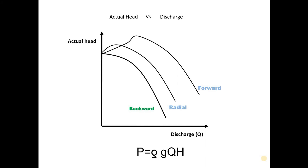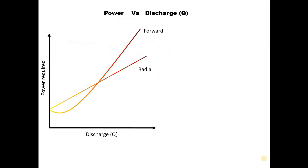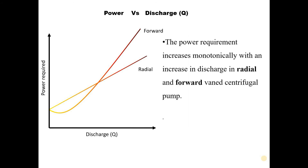For better understanding, let's look at the power versus discharge curve. We can see that the power required increases monotonically with increase in discharge for radial and forward vane centrifugal pumps. Hence, if the pump motor is rated for maximum power, it will remain underutilized for most of the operating time, which results in increased cost.